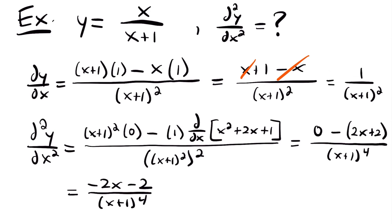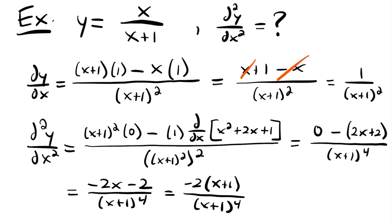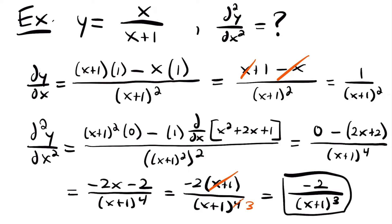It might look like we're done here, but we can actually simplify a little further. If we factor out negative 2, we get negative 2 times x plus 1 over x plus 1 to the fourth. We have a common factor of x plus 1 in the numerator and denominator, so we can cancel one out. Our final answer is negative 2 over x plus 1 to the third power — that is our second derivative of this function. You can see how functions requiring the quotient rule can get complex when taking multiple derivatives.